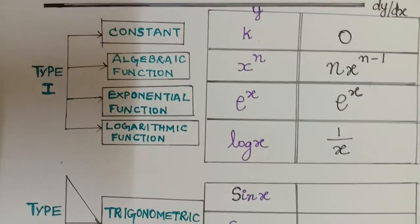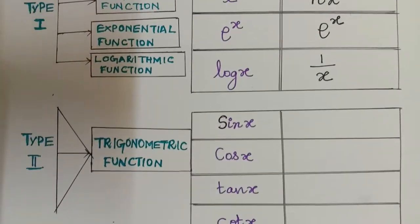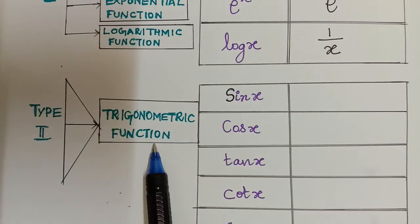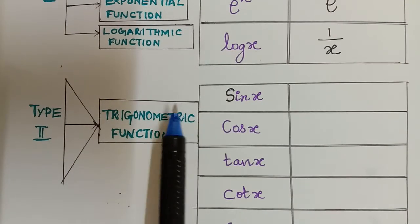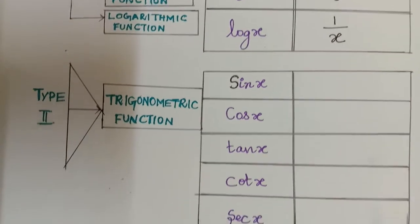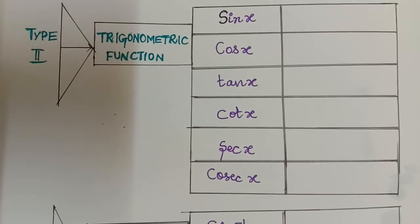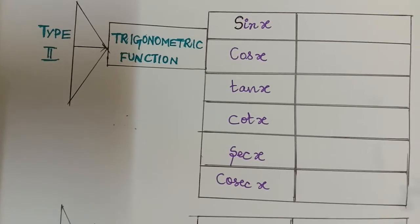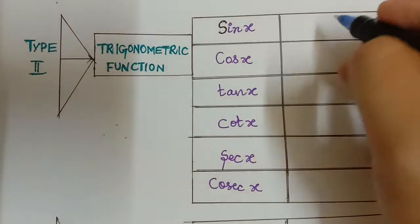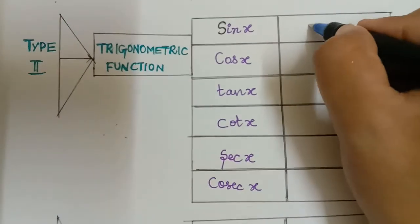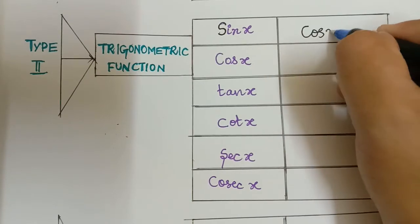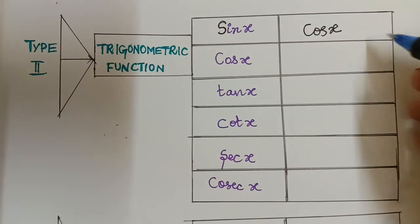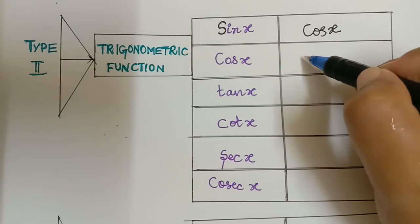Now next we shall move on to type 2, which covers trigonometric functions. We shall learn the differentiation formulas of trigonometric functions. The differentiation of sin x is always cos x, and the differentiation of cos x is negative sin x — so it will be minus sin x.